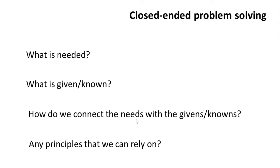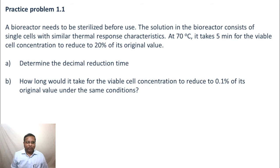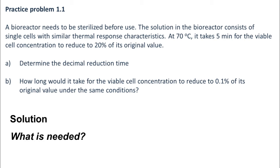We have already read this. We need to find the decimal reduction time in part A. And in part B, how long would it take for the viable cell concentration to reduce to 0.1 percent of its original value. Some information is given. The solution in the bioreactor consists of single cells with similar thermal response characteristics. Therefore, you can assume a linear dependence of the log of the viable cell concentration with time as we saw in the lecture. And also, it says that at 70 degrees C, it takes 5 minutes for the viable cell concentration to reduce to 20 percent of its original value. Having seen this, let us go about the solution. First question as we said was: what is needed? Part A, the decimal reduction time. So that is clear. So let us ask the second question.